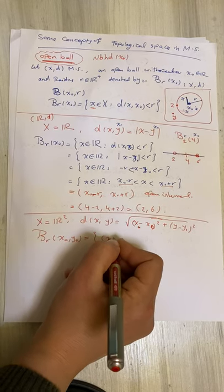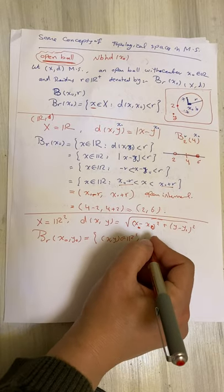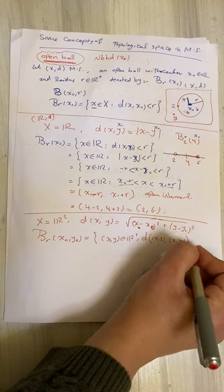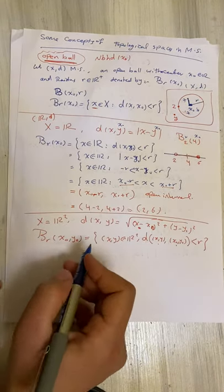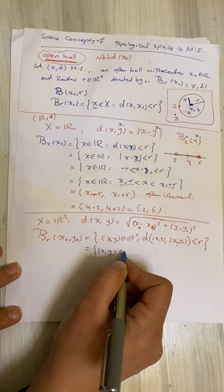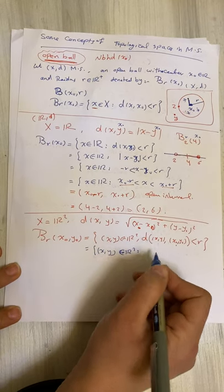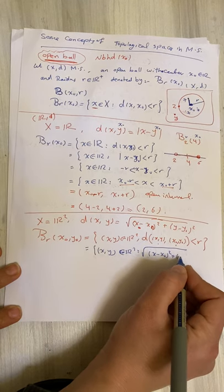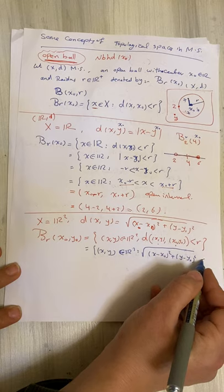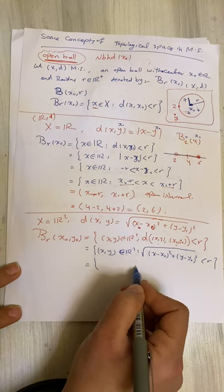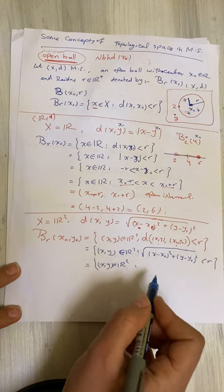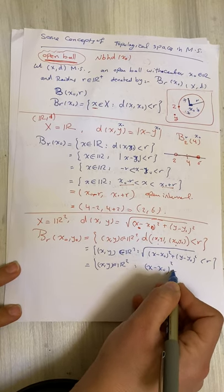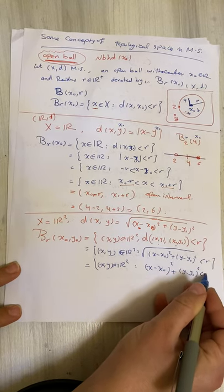In two dimensions, for xy in R², the distance between (x, y) and center (x₀, y₀) is √((x - x₀)² + (y - y₀)²). So B(r, x₀) in 2D is all (x, y) in R² such that (x - x₀)² + (y - y₀)² < r².